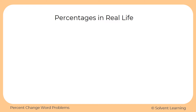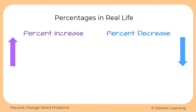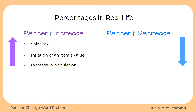Let's see how percentages can be used in real life, with examples of percent increase and percent decrease. When you're buying something, some places charge a sales tax, which is a percentage that gets added to the price. You might also see the value of something being inflated over time — we call that inflation. For example, a gallon of milk once cost only a few cents, and now it costs a few dollars. We can also see percent increase in population, and a bank can show percent increase in terms of the interest charged on a loan or paid on a savings account.